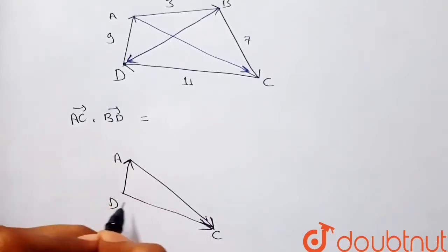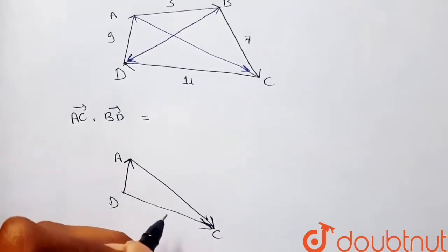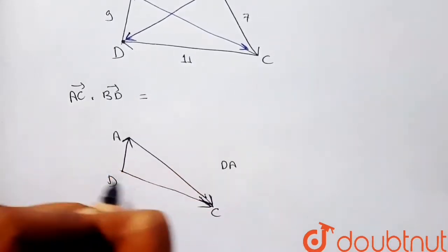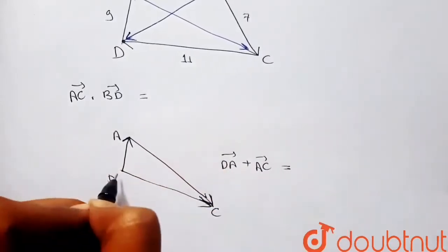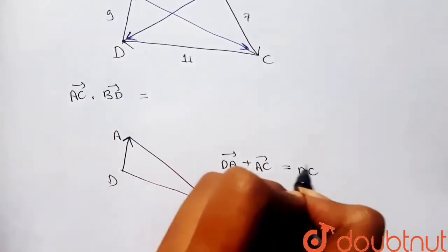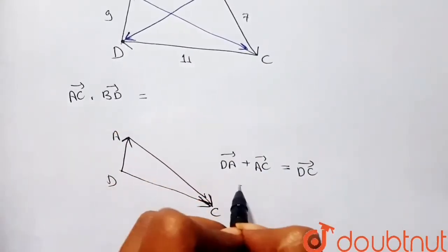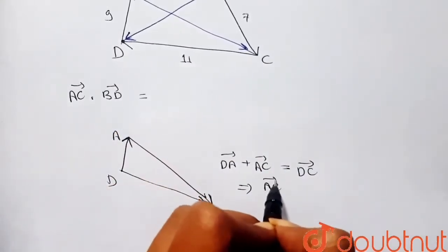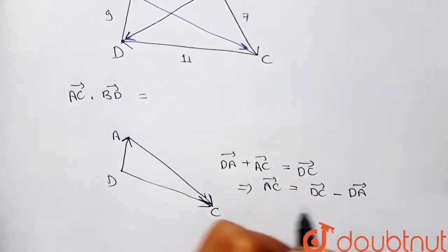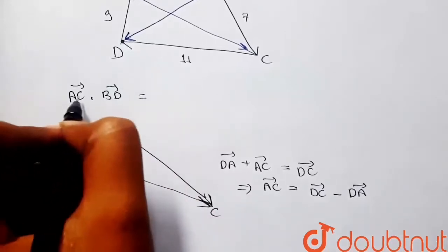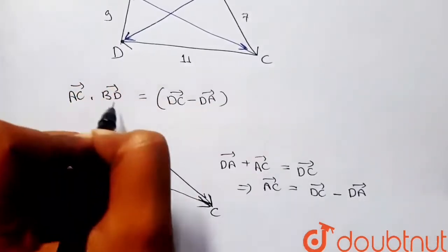For AC, I can write vector AC as vector DC minus vector DA. Here DC is actually the resultant of vector DA and AC. From this triangle I can write: vector DA plus vector AC equals vector DC, because the resultant of these two vectors is vector DC. So vector AC equals vector DC minus vector DA.